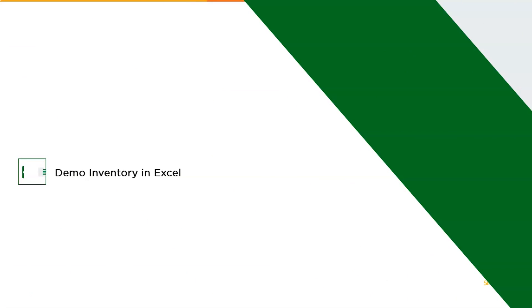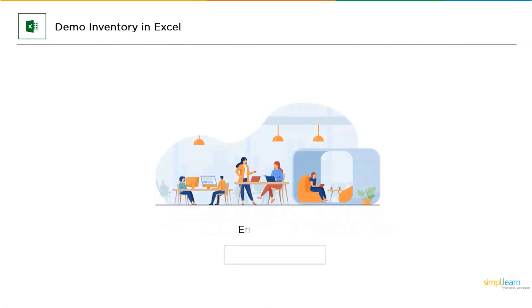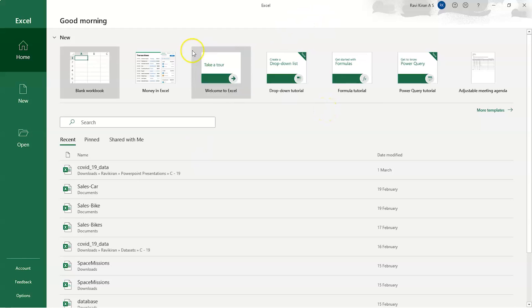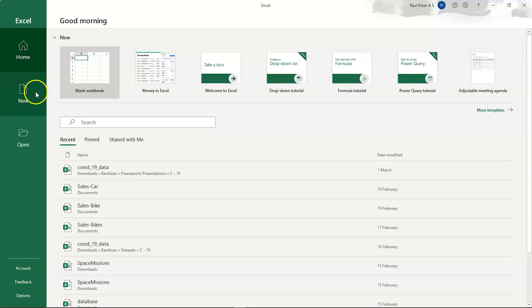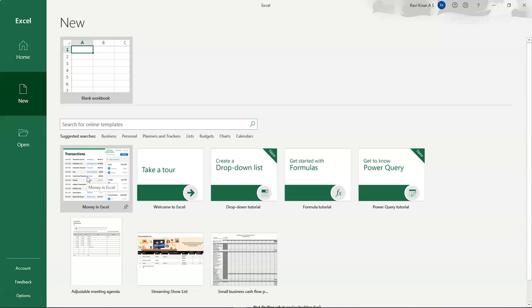Now we enter the demo section in Microsoft Excel. We'll be using Excel to create a sheet of employees in a company — covering employee ID, name, designation, salary, and more. Let me start my Microsoft Excel. This is how the homepage looks. You have a blank workbook option here, and if you want to create a new workbook, you can select the New option.